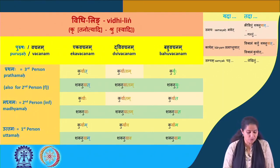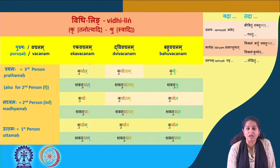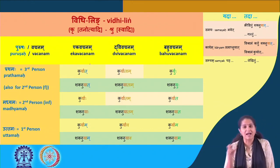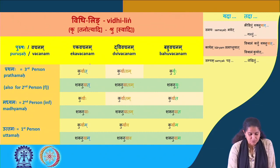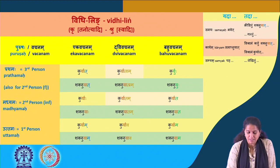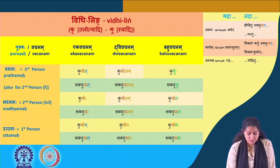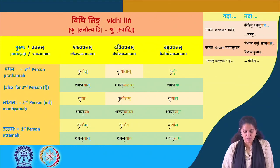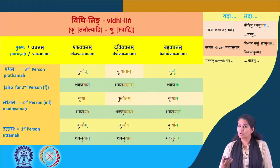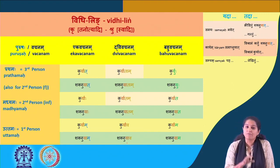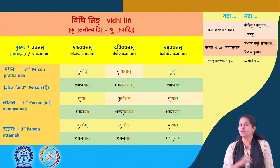Here is a comparison table: Kuryat and Shaknuyat side by side — the Swadigana and Tanadigana. Kuryat–Shaknuyat, Kuryatam–Shaknuyatam, Kuryuhu–Shaknuyuhu, Kuryaha–Shaknuyaha, Kuryatam–Shaknuyatam, Kuryata–Shaknuyata, Kuryam–Shaknuyam, Kuryava–Shaknuyava, Kuryama–Shaknuyama. If you remember one form and know the similarities, you can easily apply it in the other context as well.